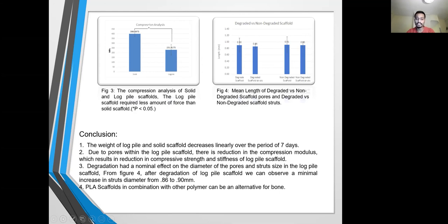The conclusion for this project is as follows. The weight of the log-pile and solid scaffold decreases linearly over the period of 7 days. Due to the pores within the log-pile scaffold, there is a reduction in the compression modulus, which results in a reduction in the compressive strength and stiffness of the log-pile scaffold. The degradation has a nominal effect on the diameter of the pores and the strut size in the log-pile scaffold.